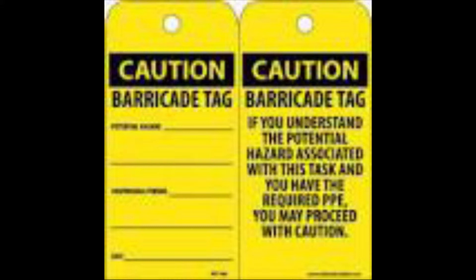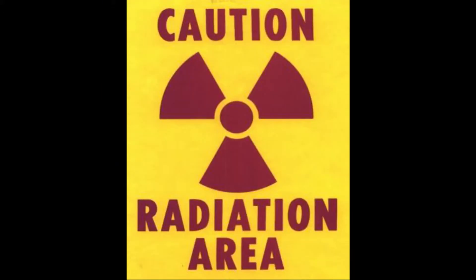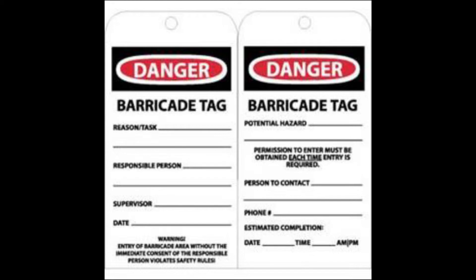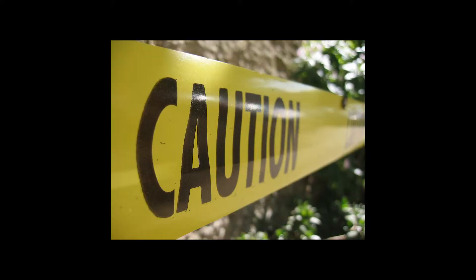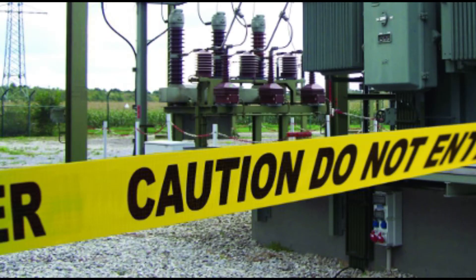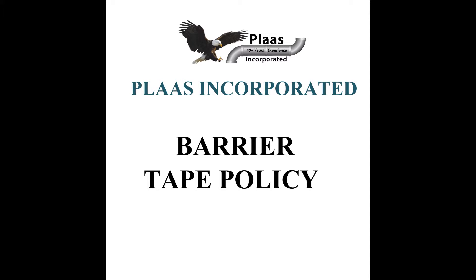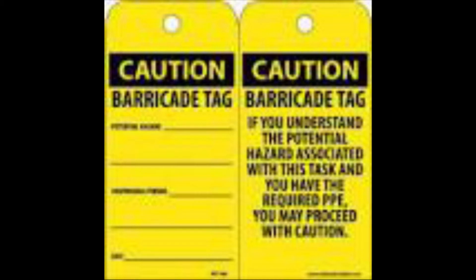Employees entering this area shall be informed about the hazards and what protective measures to follow. Yellow/magenta caution radiation area tape will be utilized to warn employees that there is a radiation hazard or where radiation materials are present. The radiographic examination crew shall identify and establish a safe work distance for the boundary. No one will be allowed to enter the taped-off area unless they have been trained in radiation safety. No one can remove the radiation tape except the person responsible for installing the tape or their designated representative. Refer to the contractor's radiation safety policy for details on establishing the safe work distance.